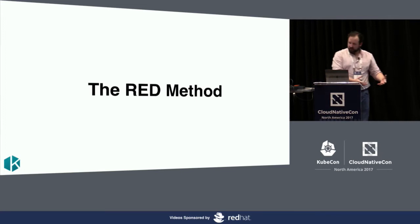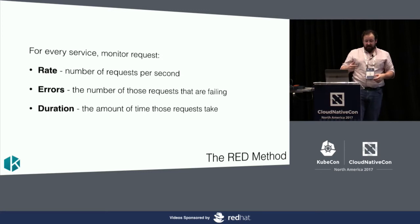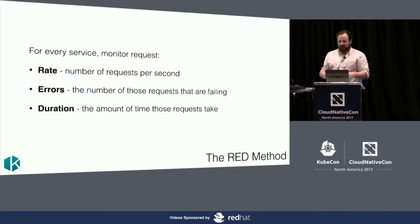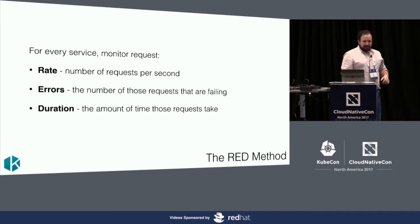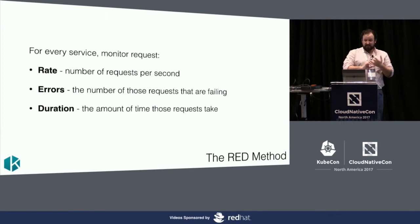The RED method is a bunch of stuff I learned at Google that I kind of misremembered. If you're familiar with Google's four golden signals, it includes saturation — and when I came up with this, I forgot about that one. USE has three characters so this needs three characters. The RED method is: for every service in your architecture, monitor the Request rate, the rate of Errors of those requests, and the Duration of those requests as some kind of distribution.